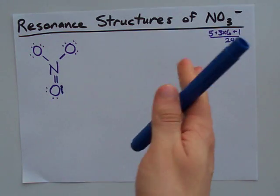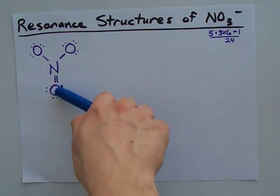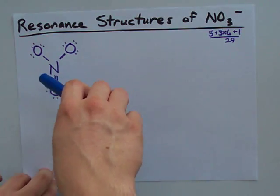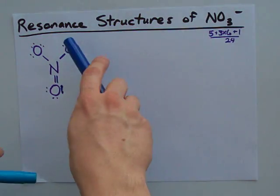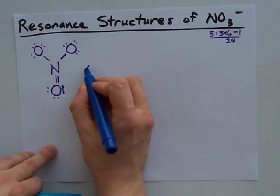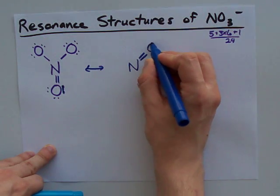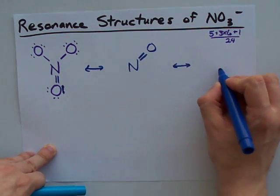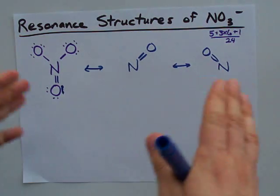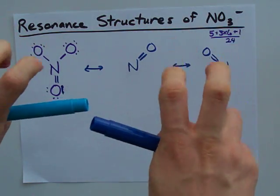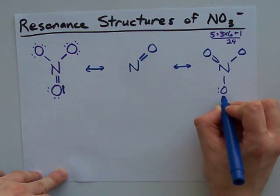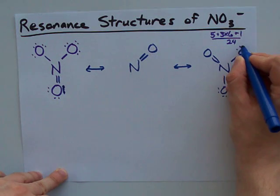But here's the deal with nitrate. That electron pair that now is double bonded to the N could have really just been any of the electron pairs on these oxygens. It could have just as easily come from that oxygen, and it could have just as easily come from that oxygen. Because there's ambiguity in where the electrons could have come from in the Lewis structures, we say that these are resonance structures for the nitrate anion.